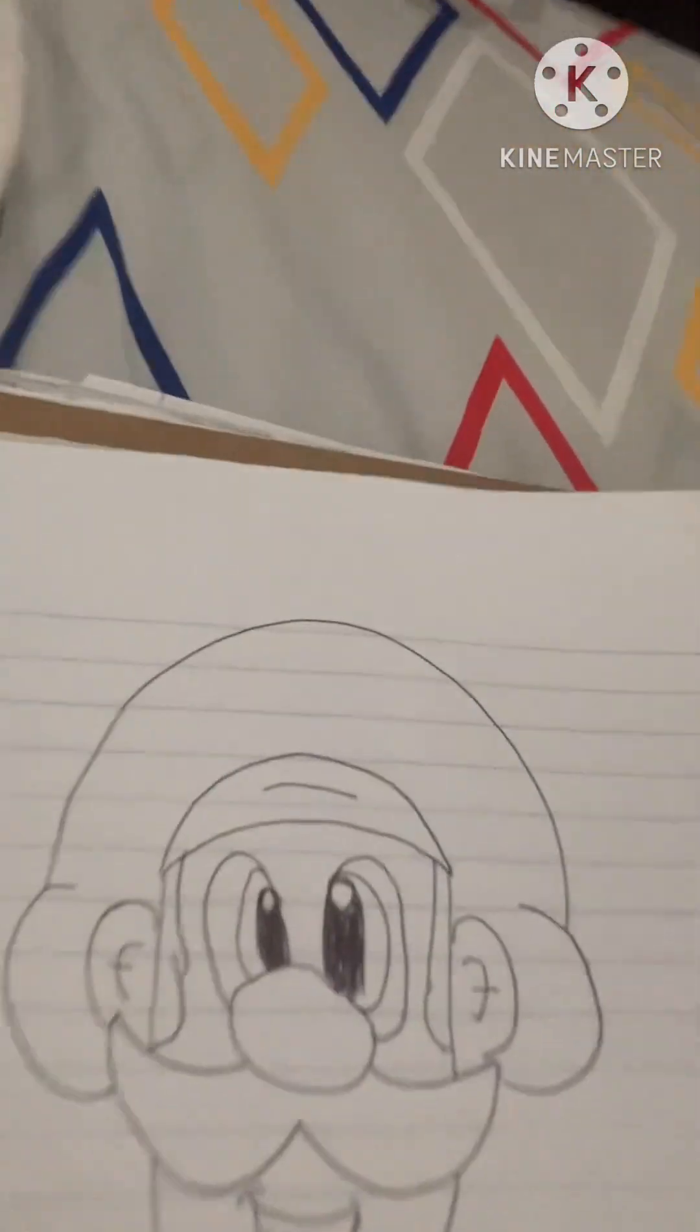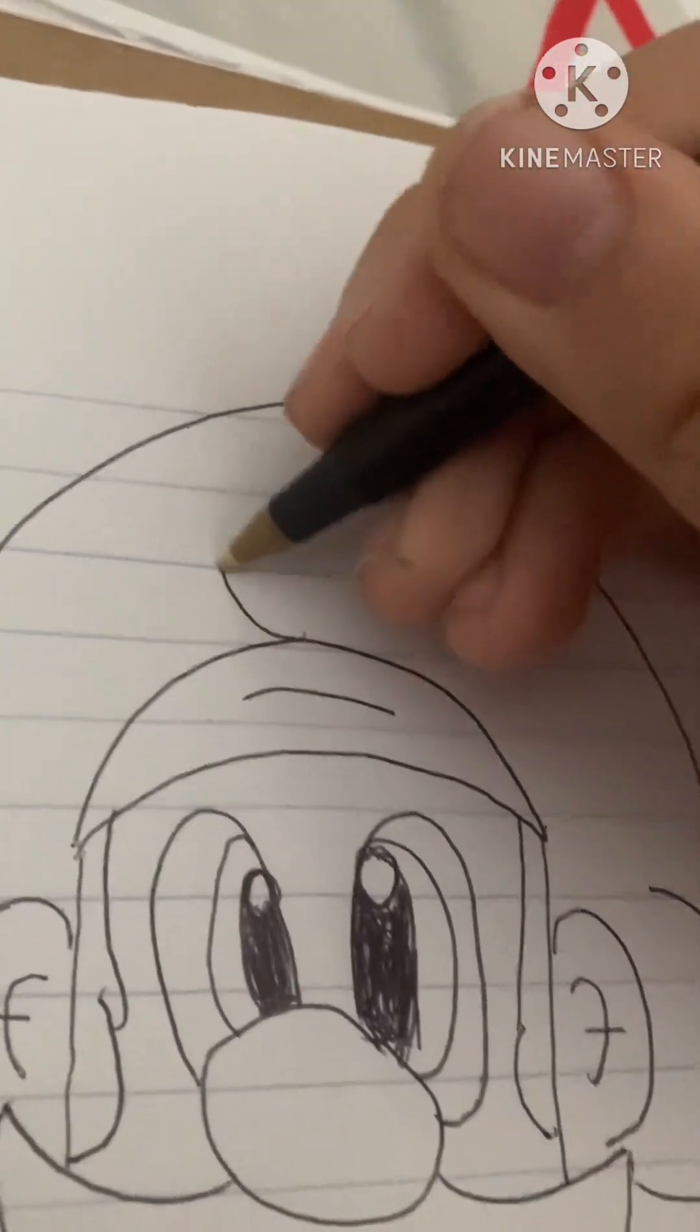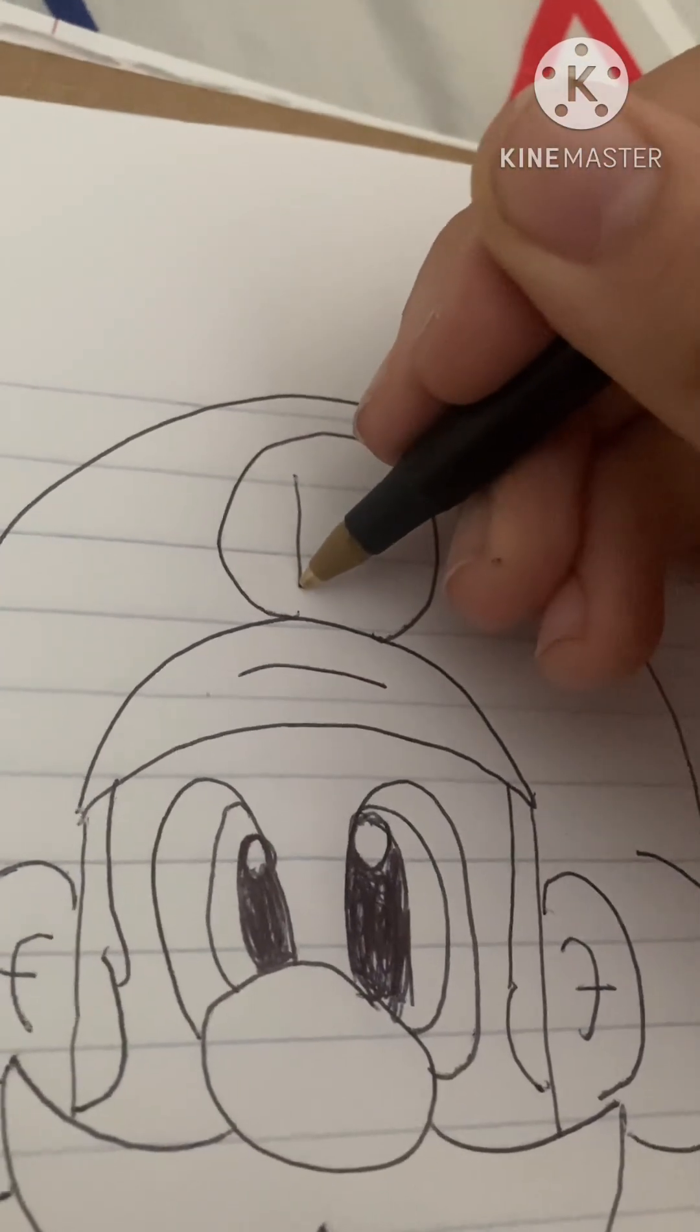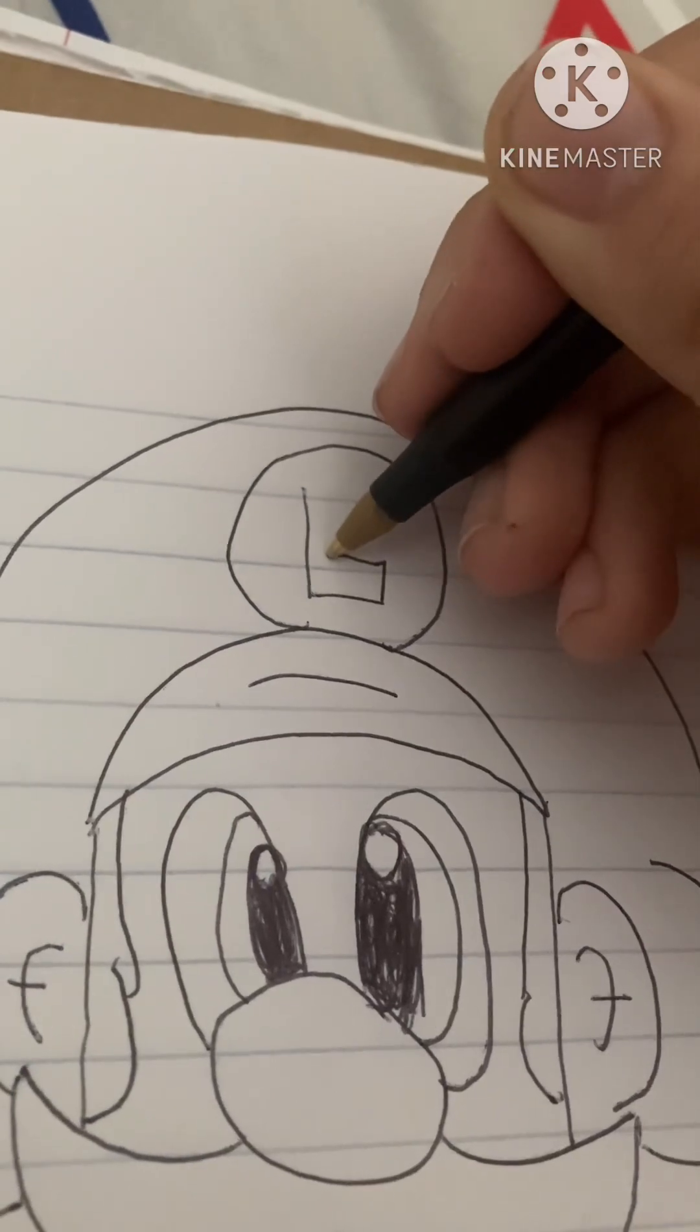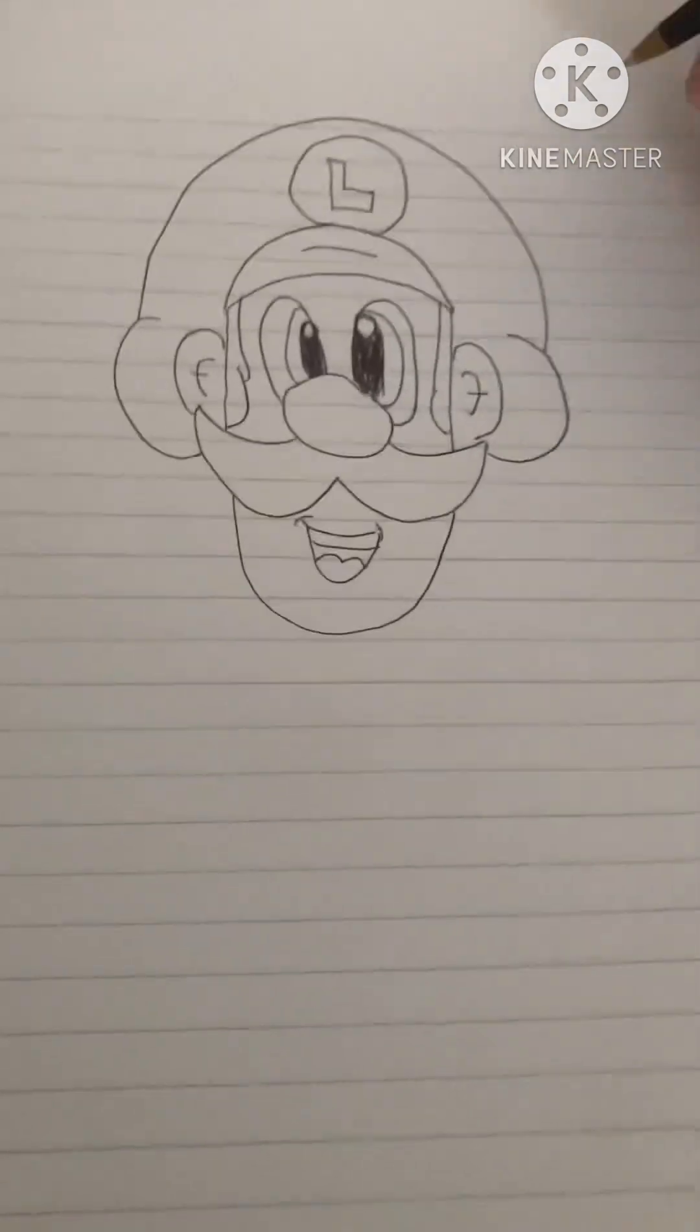And there's his hat. Now we're gonna do the logo and I'm gonna do this one a lot better than I did in the Mario tutorial. Just do a circle, and you're gonna go down, right, up, left, up, left. Like that. And there's his cap.